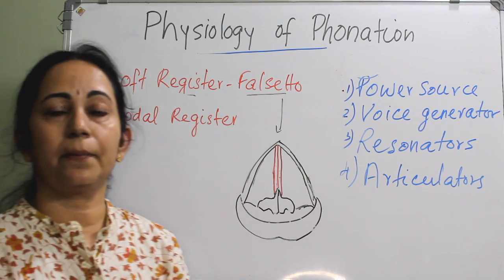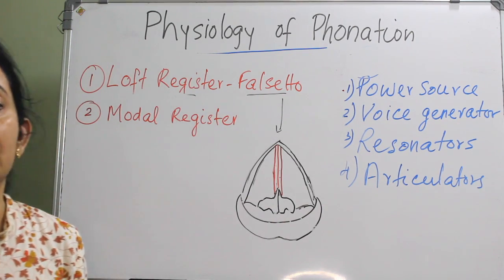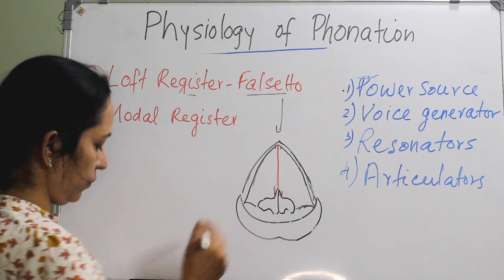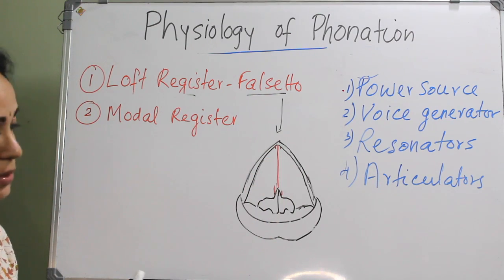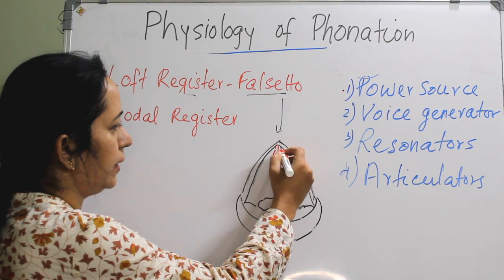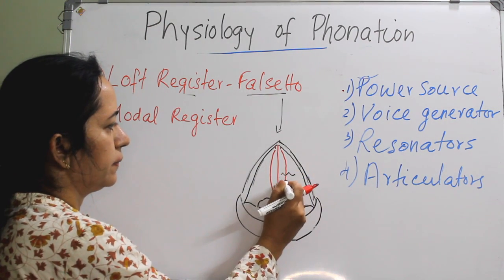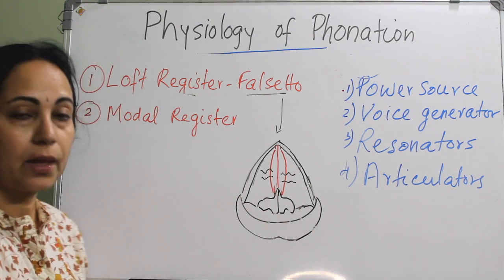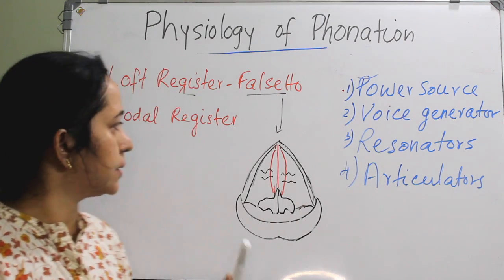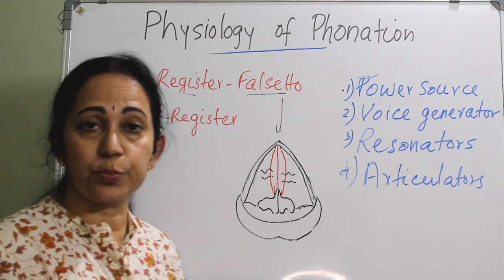The modal register encompasses most of the normal frequencies in normal speech and singing. In lower notes, the vocal folds are in a triangular cross-section; the intrinsic muscles relax and increase the bulk, allowing vibration. In the lowest notes, the infrahyoid muscles pull the larynx downward. This register covers normal frequencies in normal speech and singing.